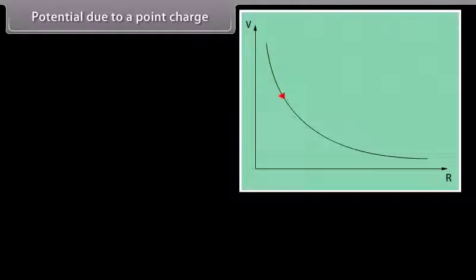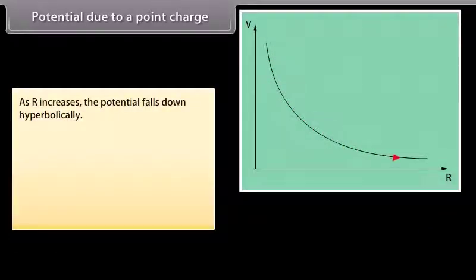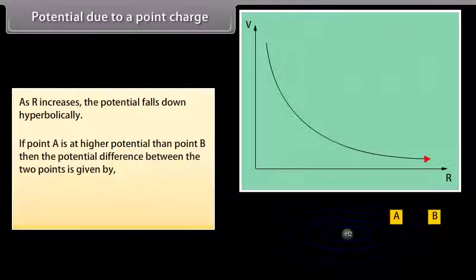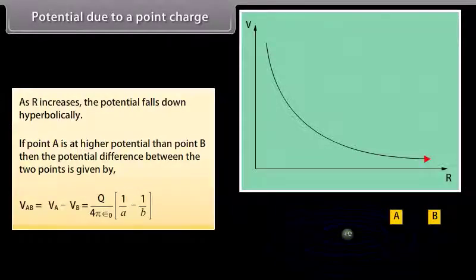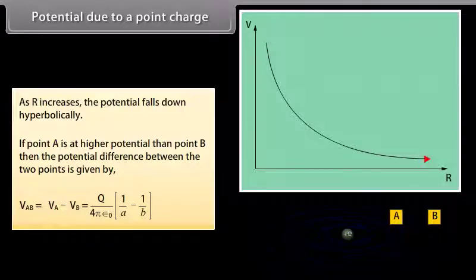We can show in a graph that as R increases, the potential falls down hyperbolically. If point A is at higher potential than point B, the potential difference is given by V_AB = V_A − V_B. Substituting values of V_A and V_B, we get V_AB = (Q / 4πε₀) × (1/A − 1/B).